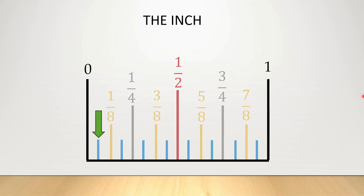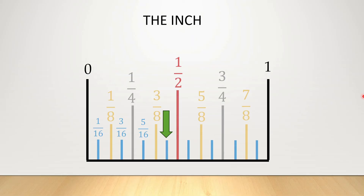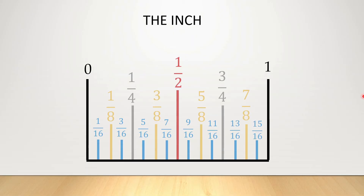Finally, if we look at the shortest line, or the blue line, we know that that's 1 sixteenth of an inch, or 1 over 16. So again, if we count by odd numbers, this one would be 3 over 16, this one is 5 over 16, this one's 7 over 16, this one's 9 over 16, this one's 11 over 16, 13 over 16, and finally, 15 over 16.